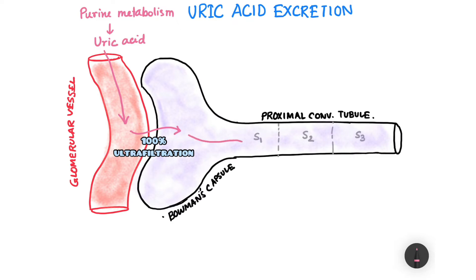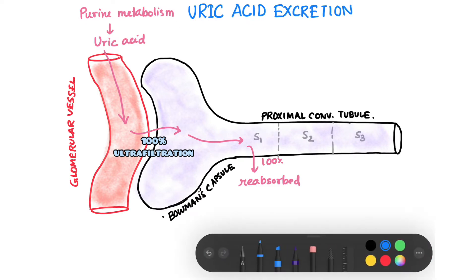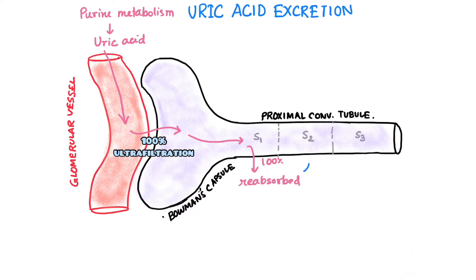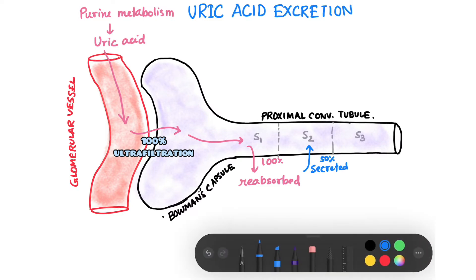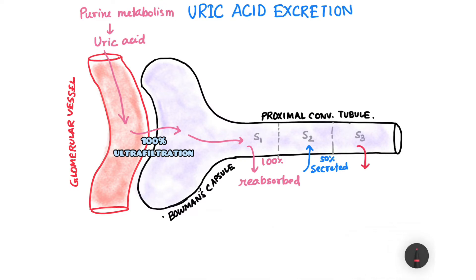When it passes through the proximal convoluted tubule in segment one of the convoluted tubule it is 100% reabsorbed. Then in segment two of the proximal convoluted tubule it is secreted — 50% of it is secreted. And in segment three of the proximal convoluted tubule you will see that 40% is reabsorbed.